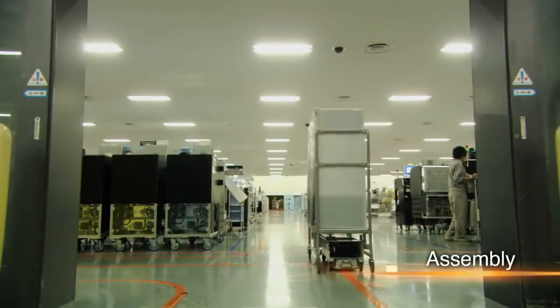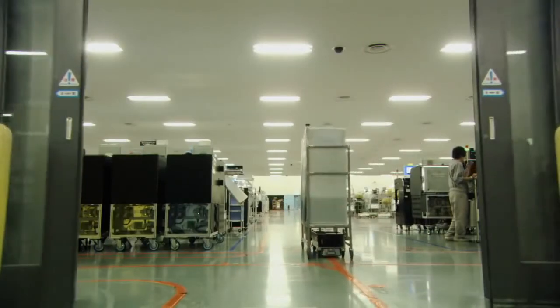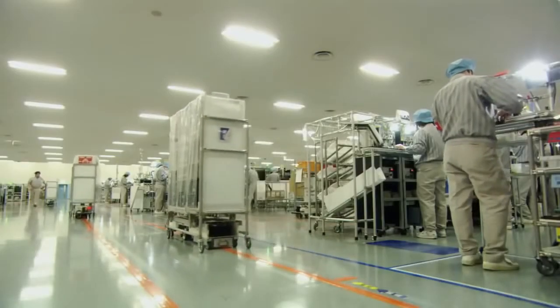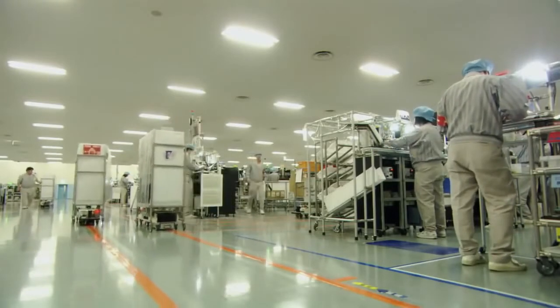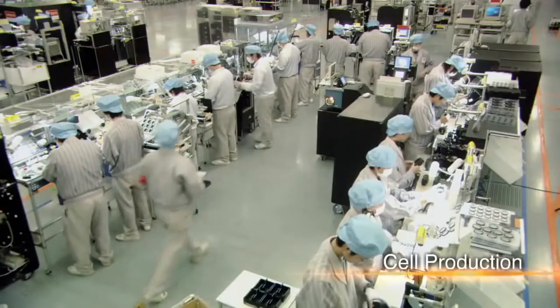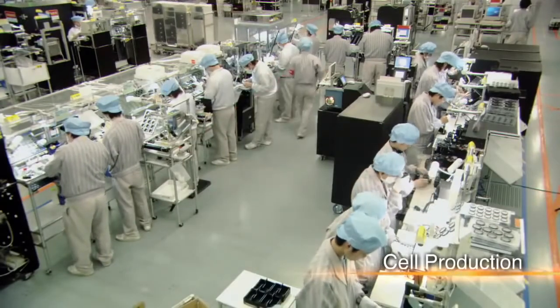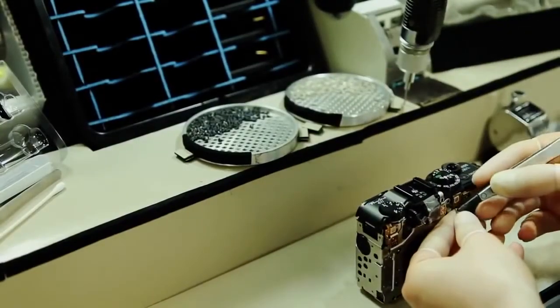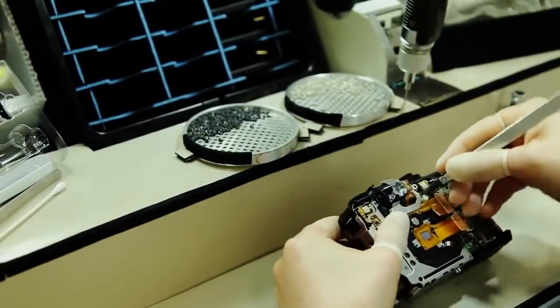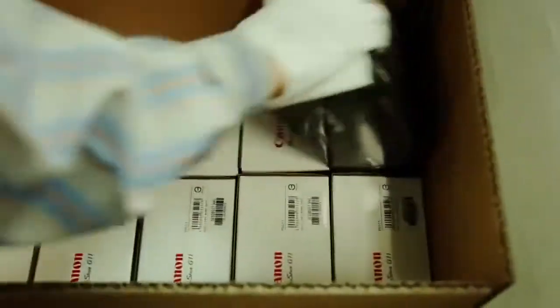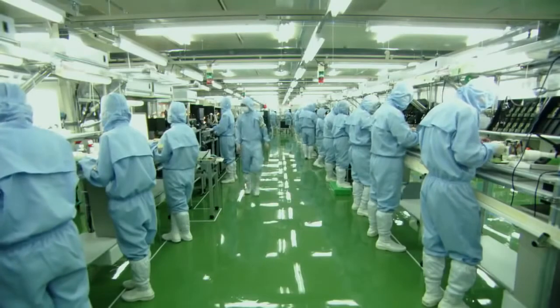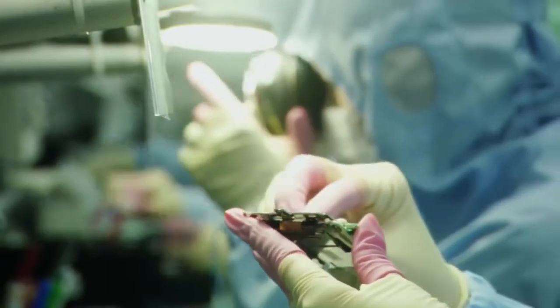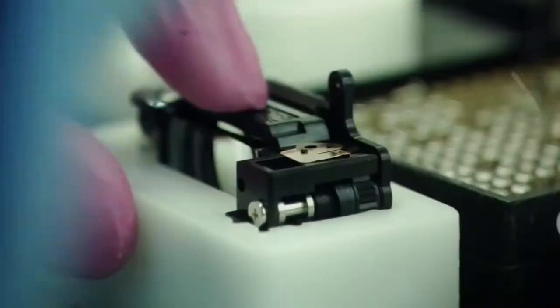The final stage in the production process is assembly. Canon uses the cell production system to assemble cameras into finished products. In the cell production system, assembly workers are grouped in cells, which can respond flexibly to the production demands of various global specifications. Digital SLR cameras are carefully assembled by cells inside a clean room.